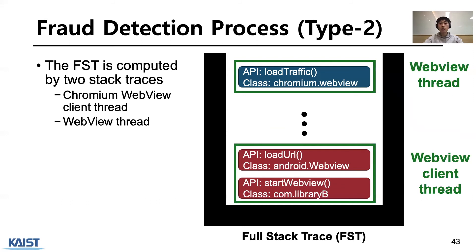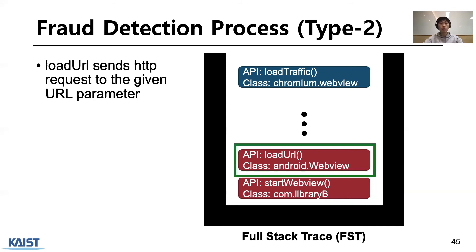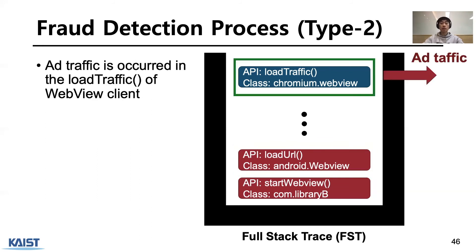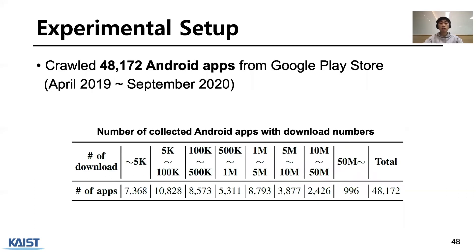I'll explain how the full Stacktrace captures Type 2 fraud, which invokes fraud activity without any interaction. Here is the FST computed by the WebView client and WebView thread. The 'start WebView' method is invoked by com.libraryc, which also invokes 'load URL' of Android WebView. The 'load URL' method loads the given URL parameter in WebView. Ad traffic occurs in the load traffic method in Chromium WebView client class, so we conclude that load URL in Library B generates click traffic without any interaction.